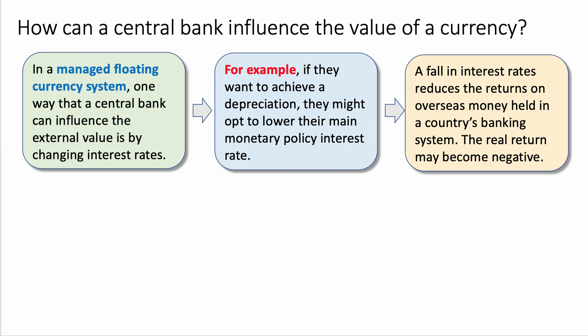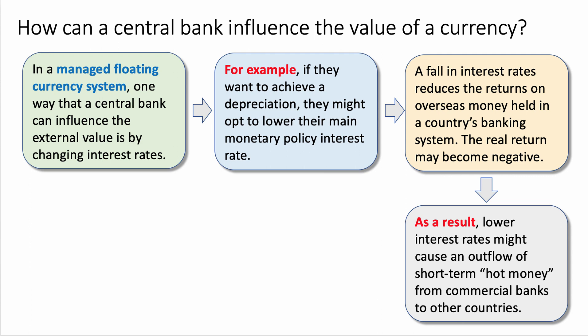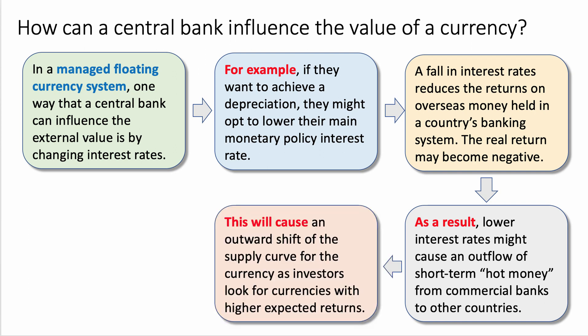There's a nice bit of theory. Indeed, if we want to go a bit further, the real return on interest may become negative if the nominal return is less than inflation. Then throw in a connective phrase — these phrases in red help to bind the paragraph together. As a result, lower interest rates might then cause an outflow of short-term hot money from commercial banks to other countries — people taking their money out of London, for example, and putting it into Tokyo. This will cause an outward shift to the supply curve for the currency as investors look for those currencies that offer the best expected returns.